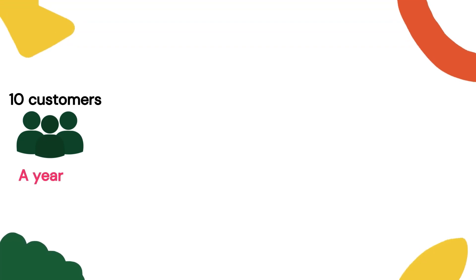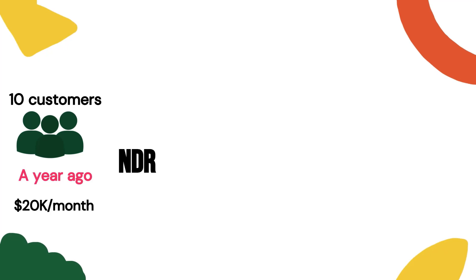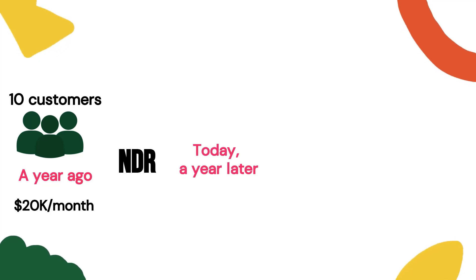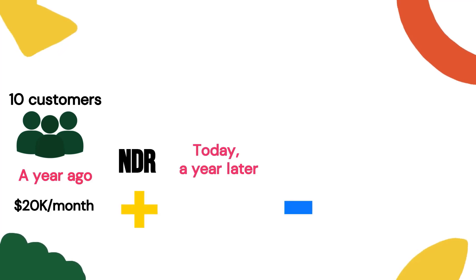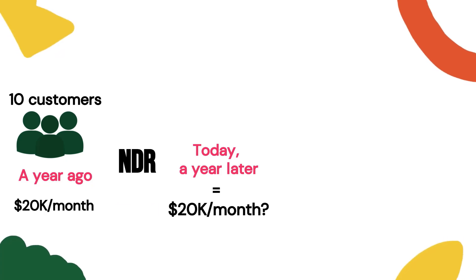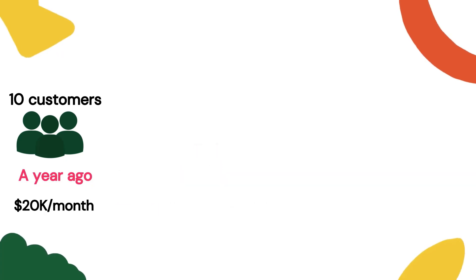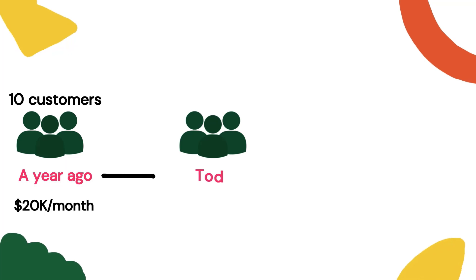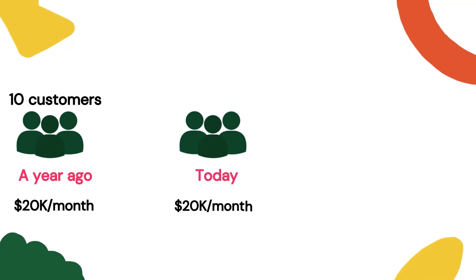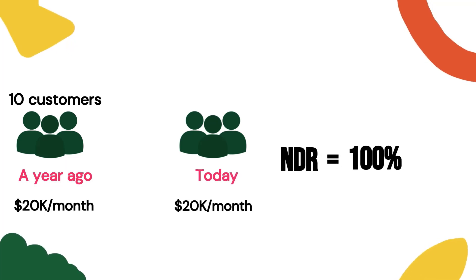For example, if we acquired 10 customers a year ago that initially were spending $20,000 per month, net dollar retention tells us whether today, a year later, they're spending collectively more, less, or the same $20,000 per month. So if they were spending $20,000 per month a year ago and today they're spending $20,000 per month as well, our net dollar retention would be 100%.